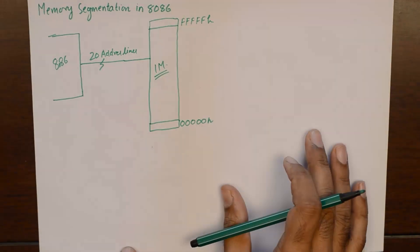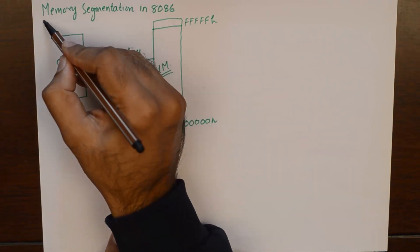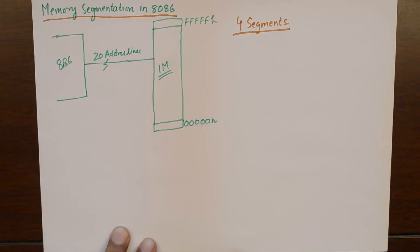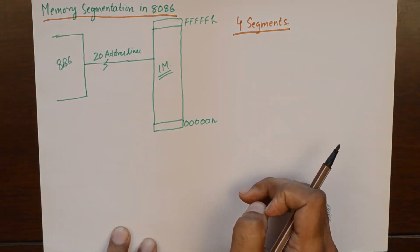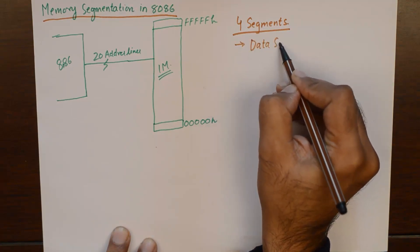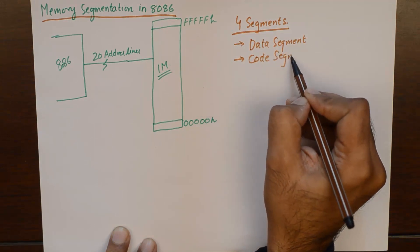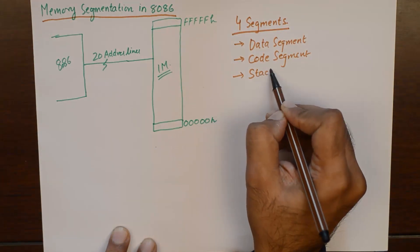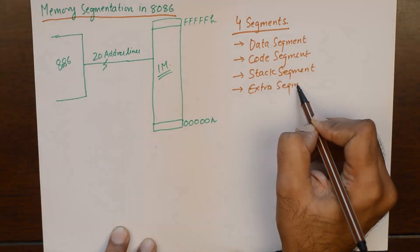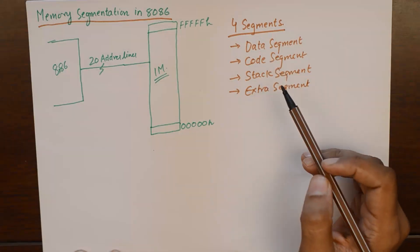There is a concept of memory segmentation in 8086 which says that there are 4 segments. Four segments refer to 4 different areas of the memory which is connected to 8086 that perform different functions. There are 4 segments known as data segment, code segment, stack segment, and extra segment. The names are suggestive enough to tell us what kind of functions these segments perform.